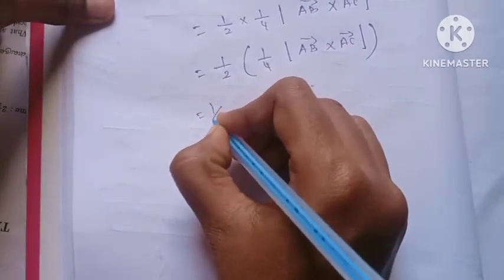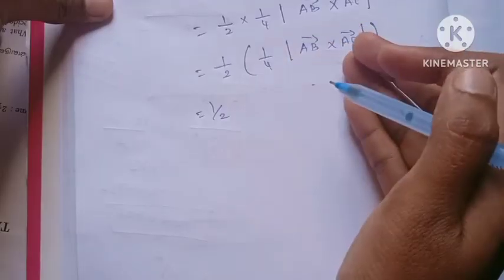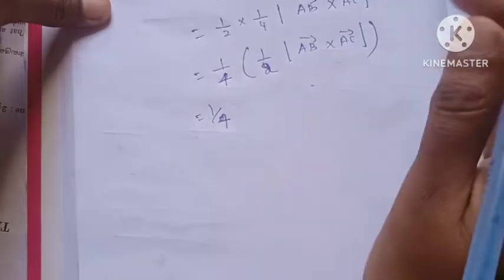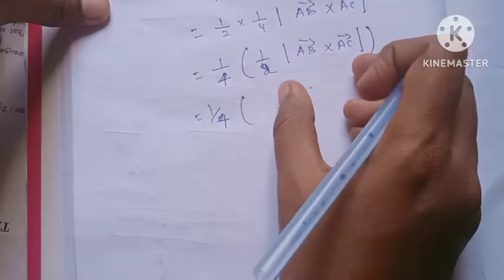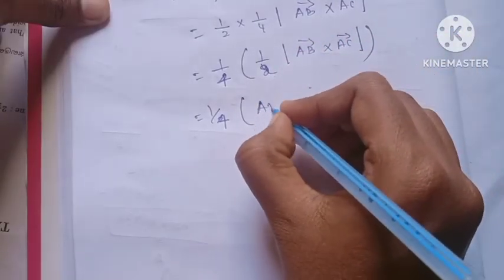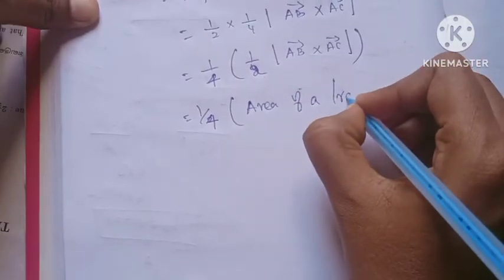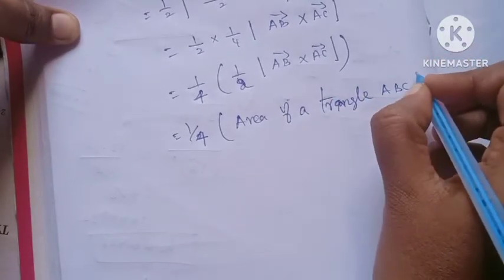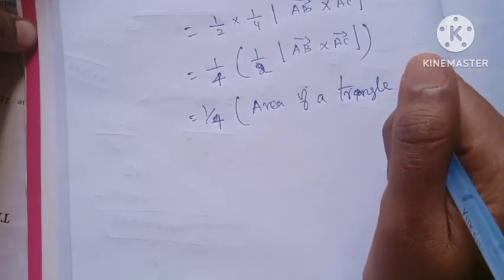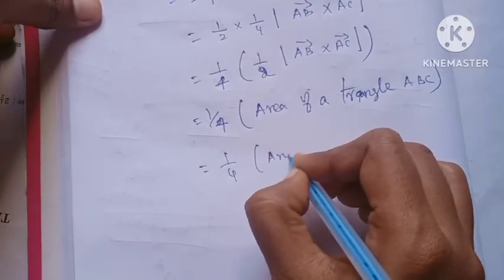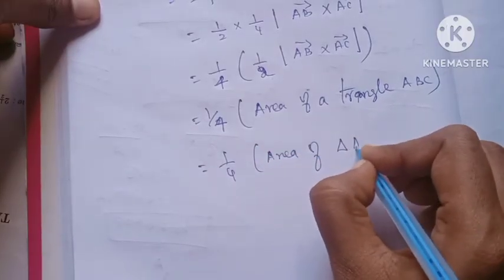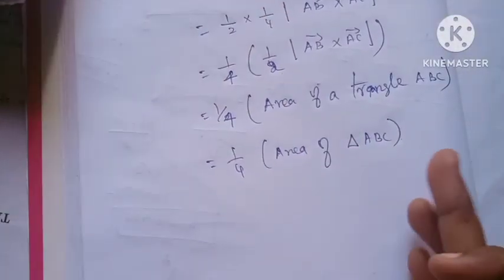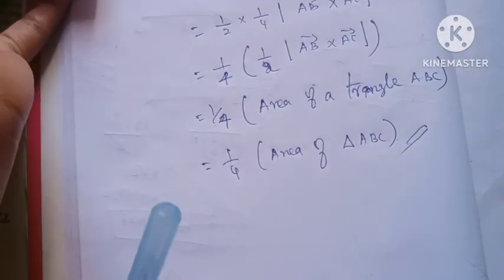Therefore, Area of Triangle DEF = (1/4) times (1/2)|AB cross AC| = (1/4) Area of Triangle ABC. Hence proved that Area of Triangle DEF equals 1/4 Area of Triangle ABC.